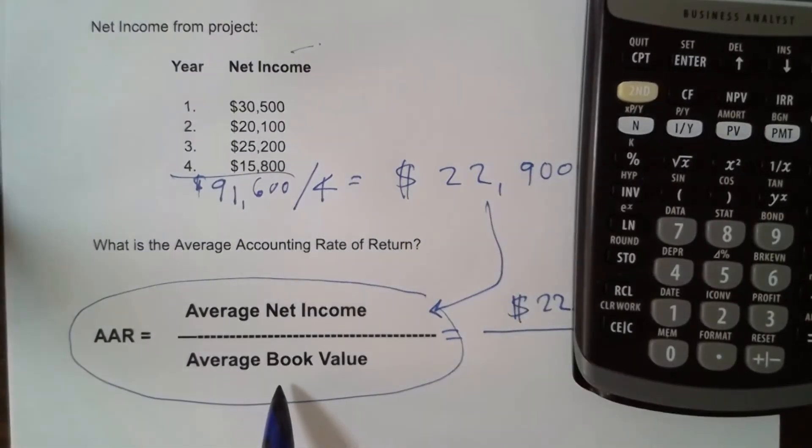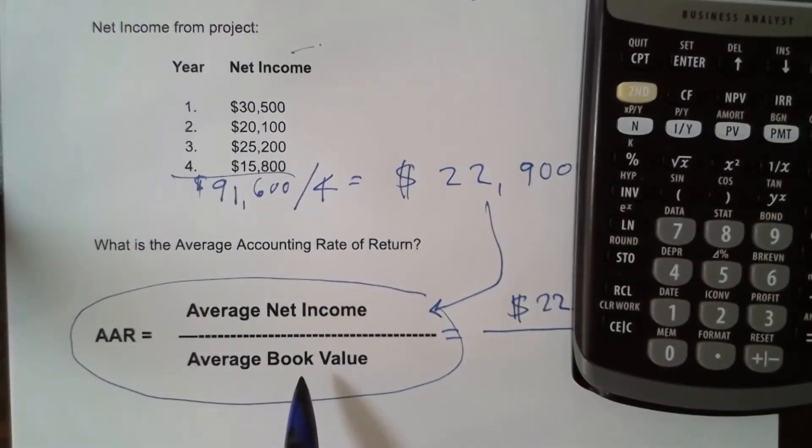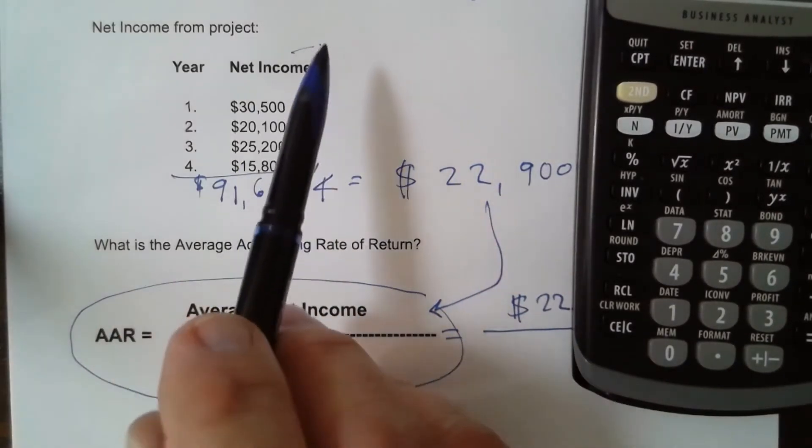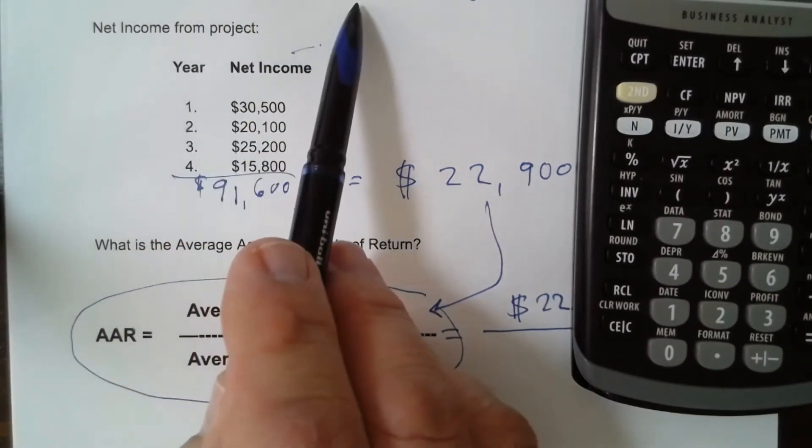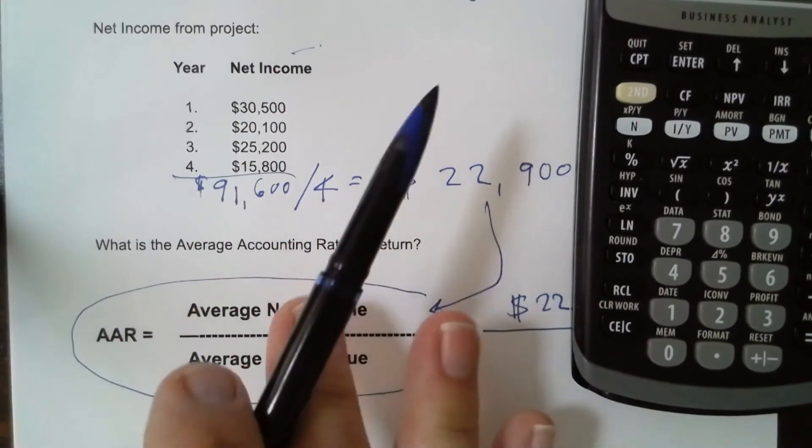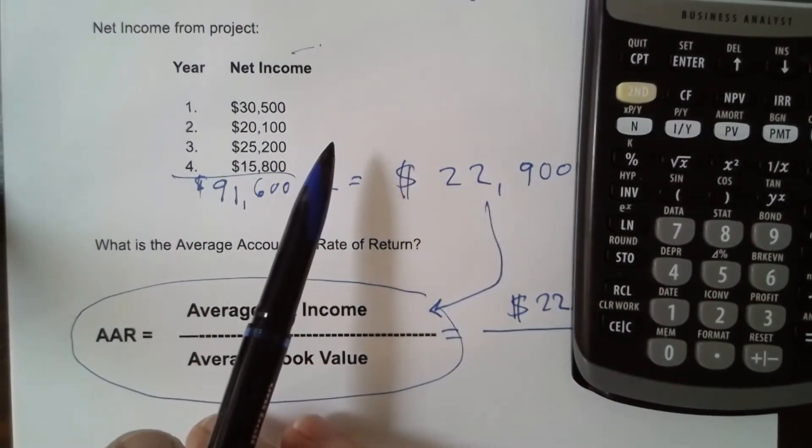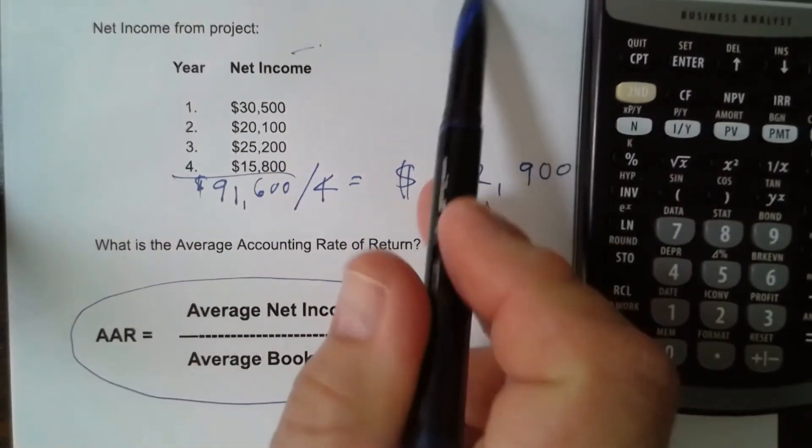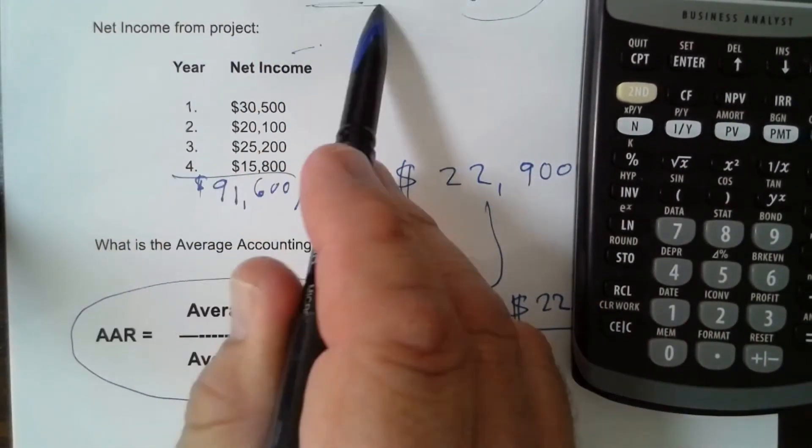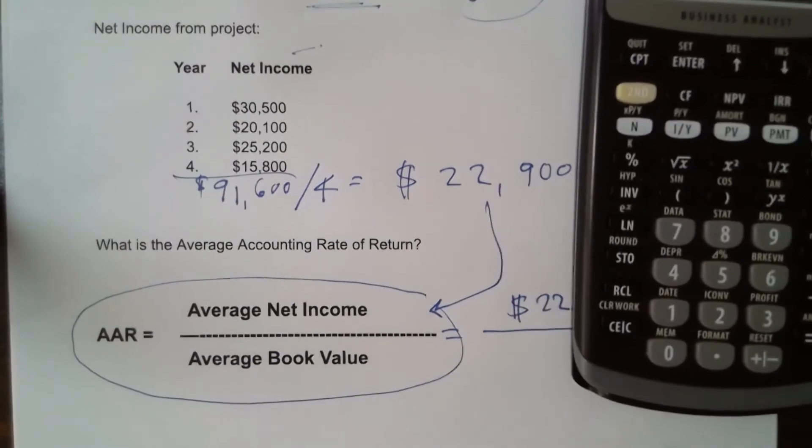Now we've got to find the denominator. Well, the average book value is going to be the average of all four years of the book value when it is being depreciated over four years using the straight line method with zero salvage value. The key points here are going to be the four years and that's a zero salvage value. Actually, we don't even have to worry about the four years.